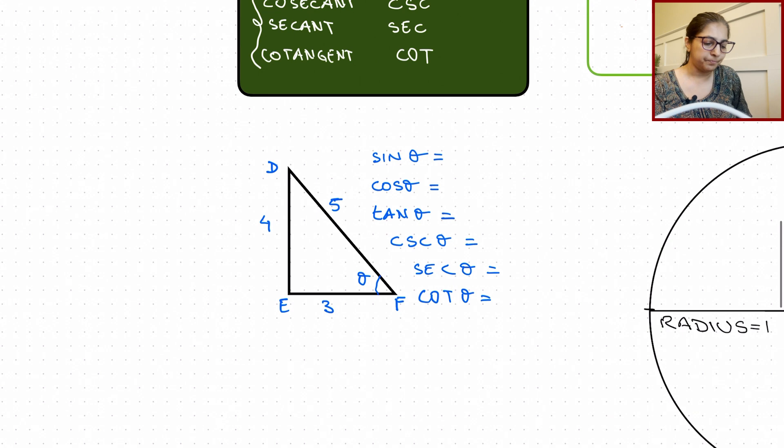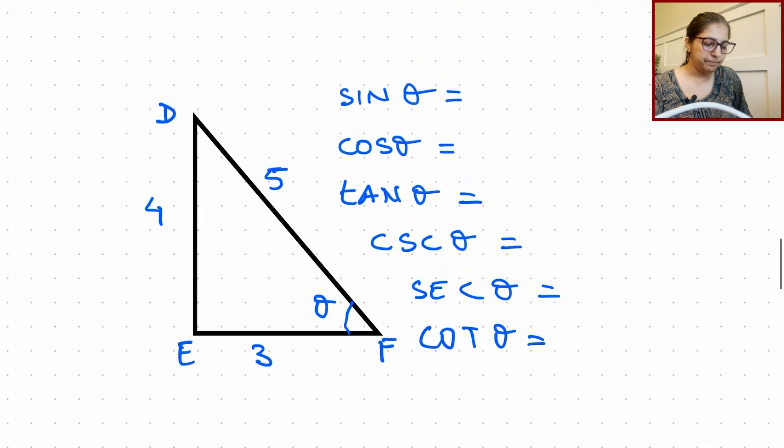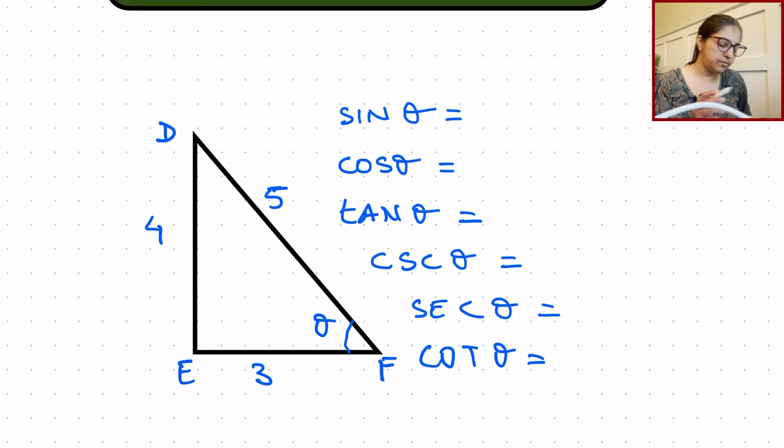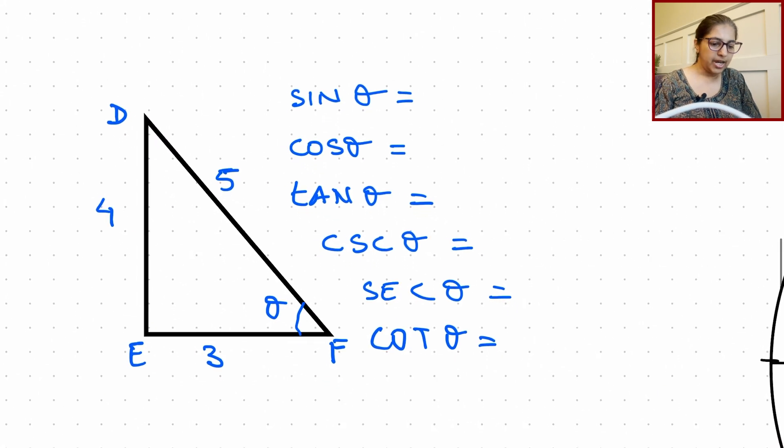All right, now let's take up an example. I've already made this triangle, and what we will do here is I've made a 3, 4, 5 right angle triangle. Now, again, these right angle triangles do follow the Pythagorean theorem. So for example, 3 squared plus 4 squared will give you the side length for the hypotenuse, square root of that.